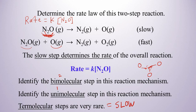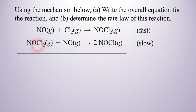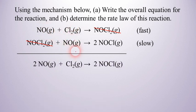Let's try another reaction mechanism. We're asked to write the overall equation. When we do that, we notice we can cancel some things out. There is an NOCl2 on the right side of the first step and on the left side of the second step, so we can cancel those two out — that's the reaction intermediate. Now we can add these together: we have two NOs and a Cl2, and we produce two NOCls.